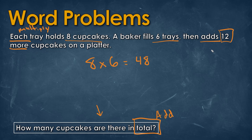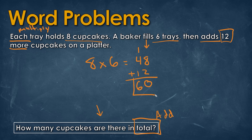Then we add 12 more cupcakes to the platter. Starting with the right column: eight plus two equals 10, put zero down and carry the one. Then one plus four plus one equals six. So our answer is 60 cupcakes in total.